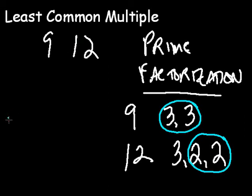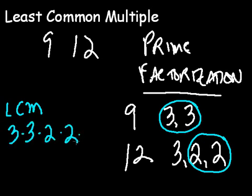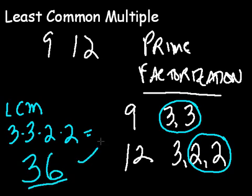And the lowest common multiple is going to be those things all multiplied together, which in this case is 36. And that's how we find the least common multiple of those two numbers.